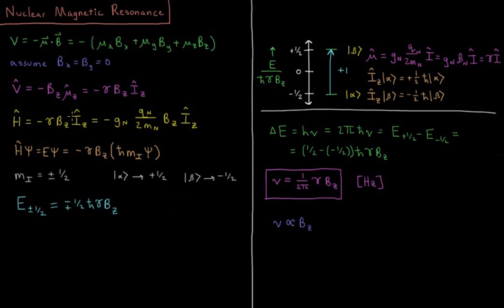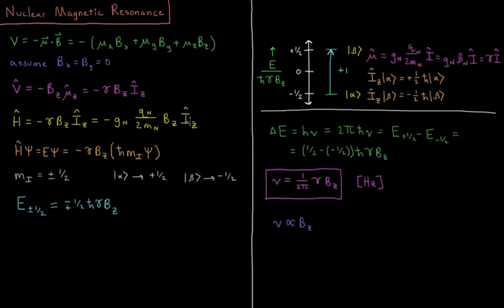Substituting in the value of the magnetogyric ratio from the previous video — the quantity that relates our magnetic dipole and our angular momentum — it is equal to the negative nuclear g-factor gN, which is usually some integer for a specific nucleus, times the charge of the nucleus divided by 2 times the mass of the nucleus, times the z component of the external magnetic field.